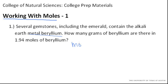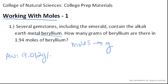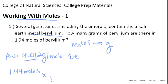Here we need to go from moles to grams. Since we're working with an element, you can find the atomic weight, which corresponds to 1 mole of beryllium. That's in the periodic table, and that number is 9.012 grams per mole of beryllium. So we can set this up, since we're given 1.94 moles. We can convert from moles to grams using our atomic weight — let's cancel out moles.